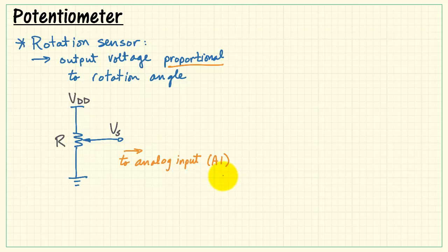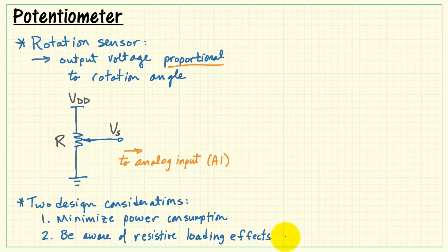Then we take the center terminal connected to the wiper and use that as the source for the analog input. We really have two design considerations. First, we would like to choose a potentiometer value to minimize power consumption, but we also need to be aware of resistive loading effects.